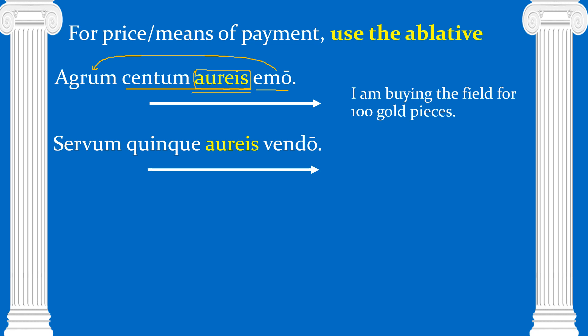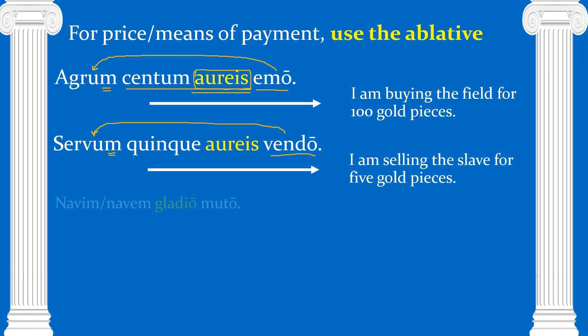If I say servum quinque aureis vendo — vendo is 'I sell.' What am I selling? I'm selling a servum — it's in the accusative case, there's the -m. Quinque aureis — I'm selling a slave for five gold pieces.